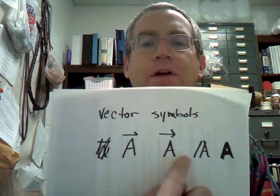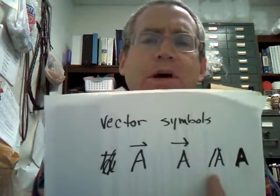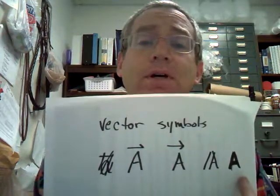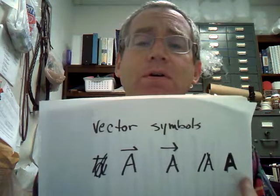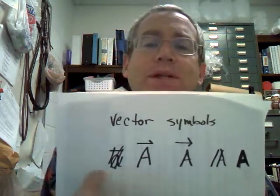Now, textbooks tend to use one of these others, and sometimes in my notes I would do it this way. This is sort of what I call the double print. And then the last one is the bold face. Textbooks, especially the higher order textbooks, tend to use the bold face to represent vectors. But these are different ways that you might see them represented.